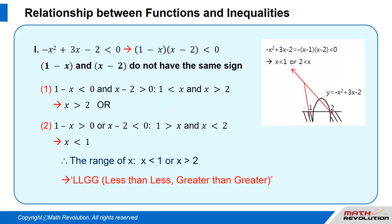Therefore, the range of x becomes x is smaller than 1 or x is greater than 2, which means LLGG — less than less, greater than greater — as shown by the figure above.